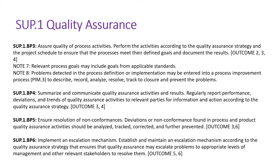BP4 talks about regularly reporting quality assurance activities and results — report performance deviations and trends of quality assurance activities to relevant parties for information and action, according to the quality assurance strategy. Once we have recorded the results, we have to see the performance deviations and analyze them — similar to metric analysis. We need to analyze the findings identified during audits, see where exactly the product is failing or where more issues are concentrated, look at the density of non-conformances, and try to strengthen that particular process inside your project.